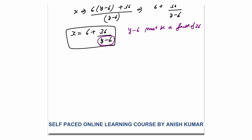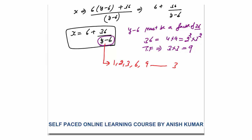y − 6 must be a factor of 36. Since 36 = 2² × 3², the total number of factors is (2+1)(2+1) = 9, giving 9 positive possible values. The factors are 1, 2, 3, 6, 9, ... up to 36. Importantly, negative factors also divide 36 and give integer values, so we must also check −1, −2, −3, −6, −9, ... down to −36.